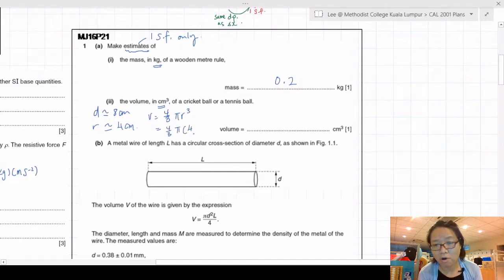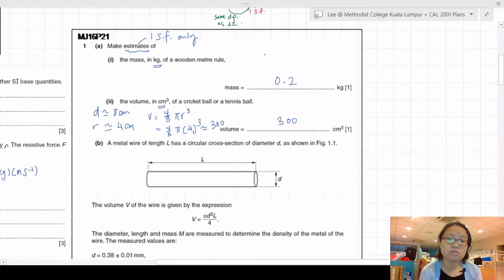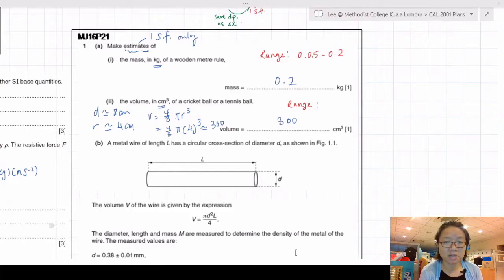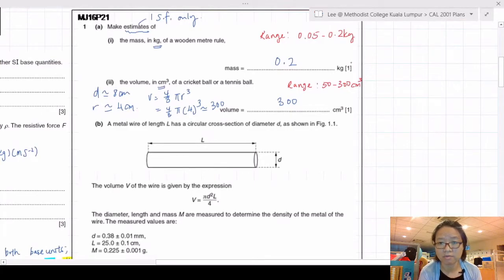Think about a tennis ball. If you guess the diameter is about 8 cm, estimate the radius about 4, then plug into the equation 4/3 π r³. You get around 300 cm³. This kind of question has a range in the mark scheme. This would be 0.05 to 0.2 kg, and 50 to 300 cm³, though I think that's a bit small. This can ask anything including the volume of a human head.